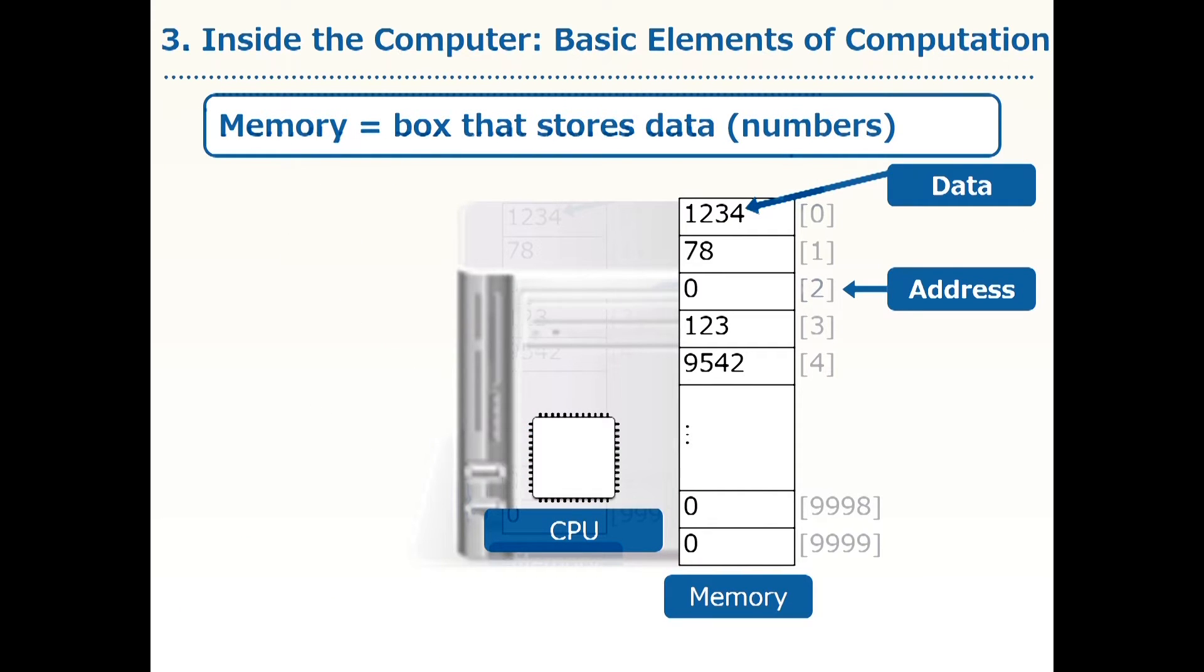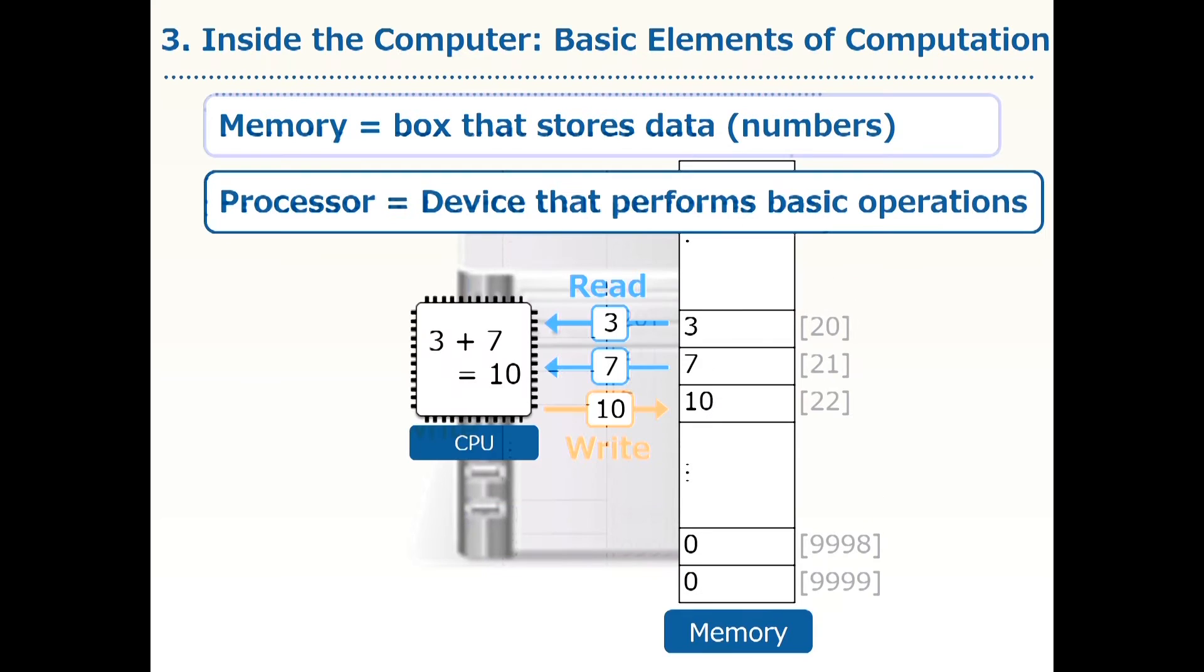Let's start with memory. Memory is a box that stores data, that is numbers. It's arranged like so. CPU takes data from this memory and performs basic operations. You might be wondering what basic operations are. That is, fundamental unit of computation, like atoms. Let's think about that.